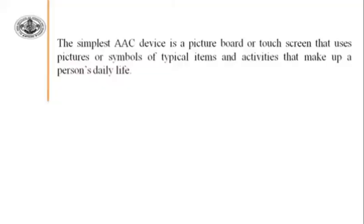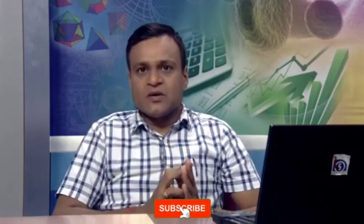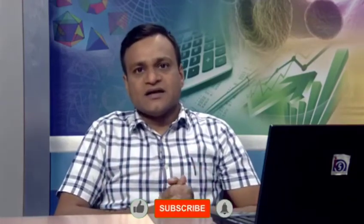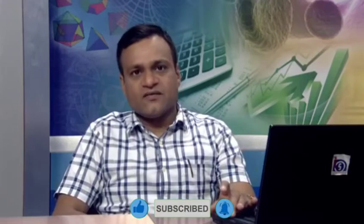The simplest AAC device is a picture board or touch screen that uses pictures or symbols of typical items and activities that make up a person's daily life. For daily life purposes, we can use AAC devices with a touch screen mobile-type equipment. Many types of communication words are stored on the device, so whenever we go outside we can touch a particular item and the mobile will convert text to speech, so the other person will understand easily.